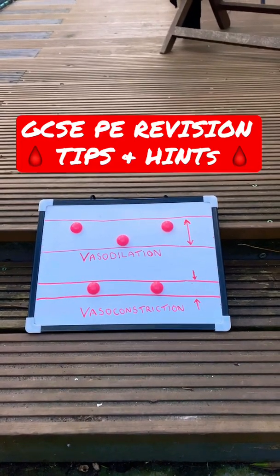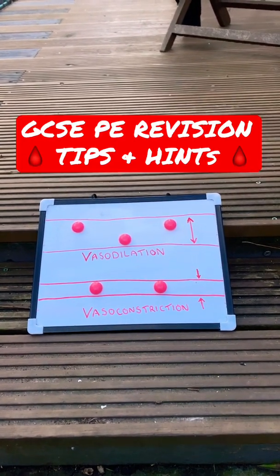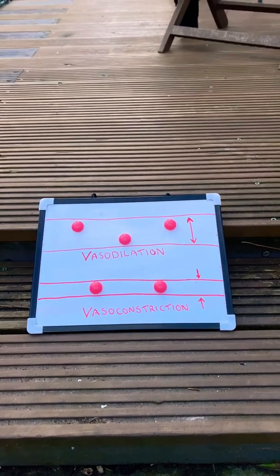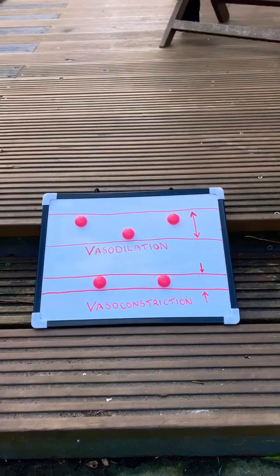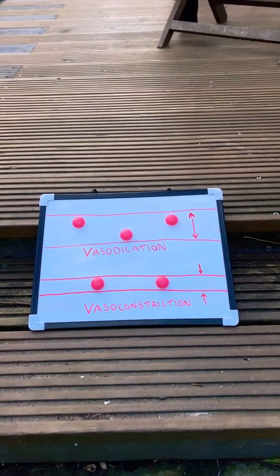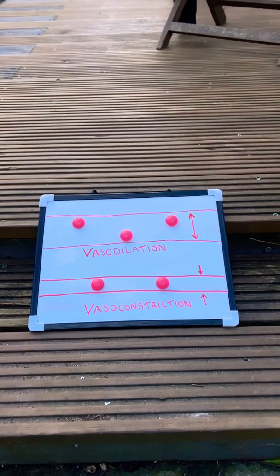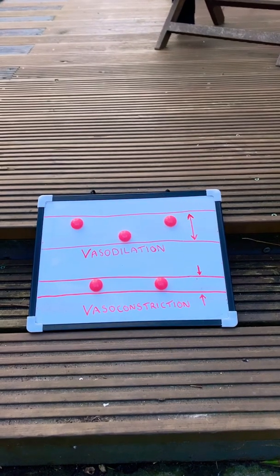Here we have another YouTube short to support your understanding. When you look at an examination paper and you see the term redistribution of blood, what does this mean? Well, you need to mention both of the words you can see: vasodilation and vasoconstriction.